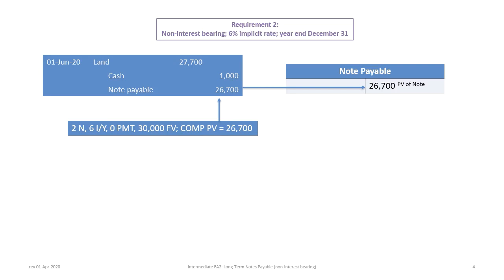We begin with the journal entries. On the date of purchase, June 1st 2020, we debit land for a different amount than before. We credit cash for the $1,000 down payment. We credit note payable for the present value of the note, $26,700, calculated using a financial calculator: 2 periods, 6 IY, 0 payment, $30,000 future value — compute present value gives $26,700. The debit to land is the sum of the present value of the note plus the cash down payment, so the debit is $27,700.